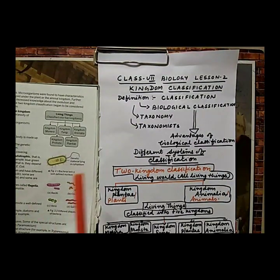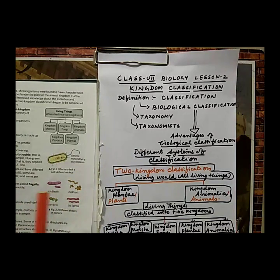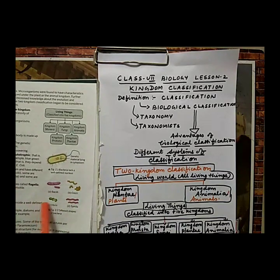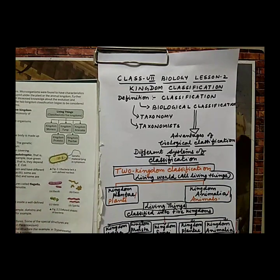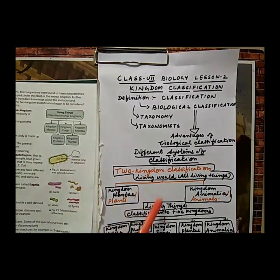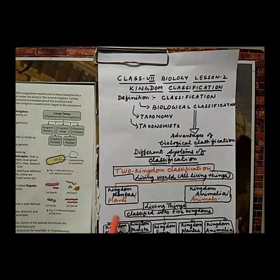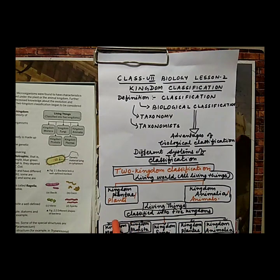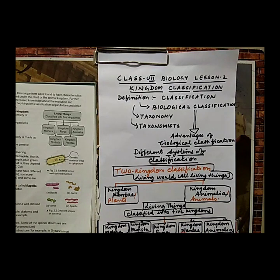R. H. Whittaker in 1969 proposed a further division of living organisms into five kingdoms. Under this five kingdom classification, he made five divisions: kingdom Monera, kingdom Protista, kingdom Fungi, kingdom Plantae, and kingdom Animalia.